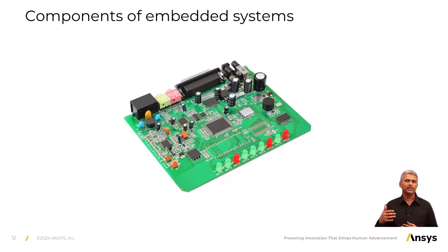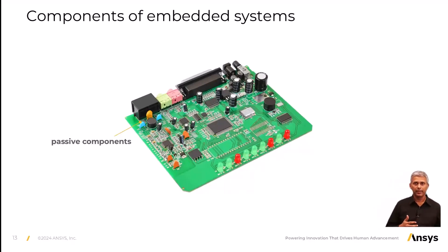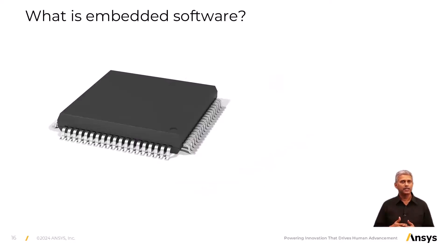If you have ever seen what's inside a TV or a smartphone, you will find many wires and cables connected to a printed circuit board. The circuit usually consists of many electronic components such as resistors, capacitors, transistors, and integrated circuits. Most smart devices include a microprocessor or a microcontroller, which is the brain of the system.